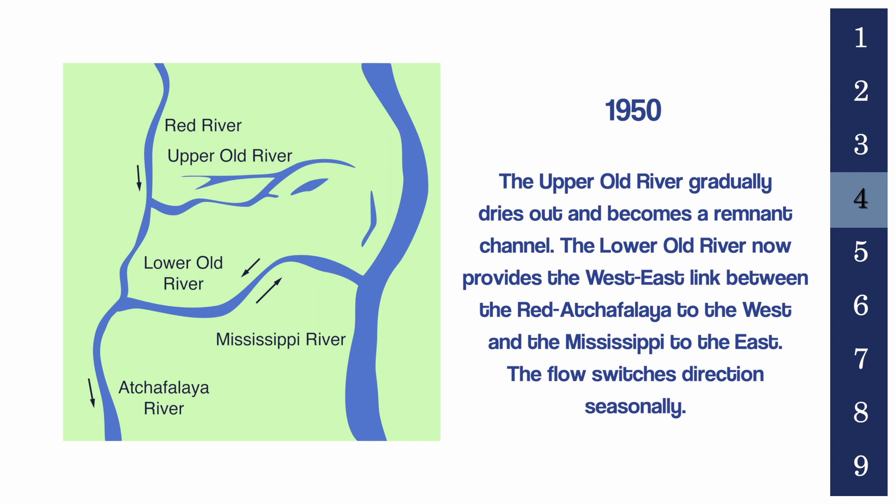By 1950, the Upper Old River gradually dried out and became a remnant channel. The Lower Old River now provided the west-east link between the Red-Atchafalaya to the west and the Mississippi to the east, with flow switching direction seasonally.